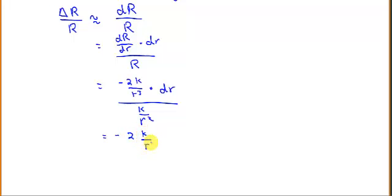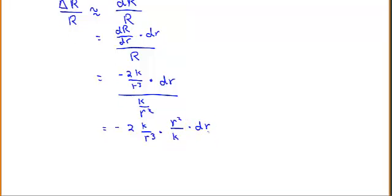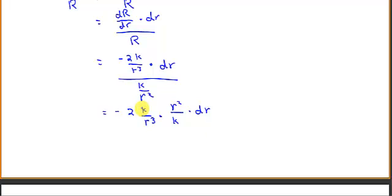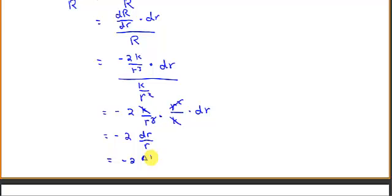After inverting and multiplying, the k's cancel and two of the r's cancel, leaving an r in the denominator. The result simplifies to negative 2 times dr over r, which is precisely negative 2 times delta r over r — that is, negative 2 times the relative error in the radius.